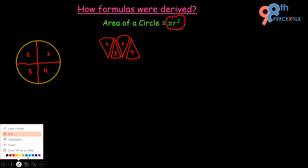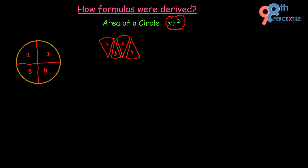Now I'm going to divide this circle again, this time into eight equal parts. So I have divided the circle into eight equal parts: first, second, third, fourth, fifth, sixth, seventh, and eighth. Now I have eight equal parts.